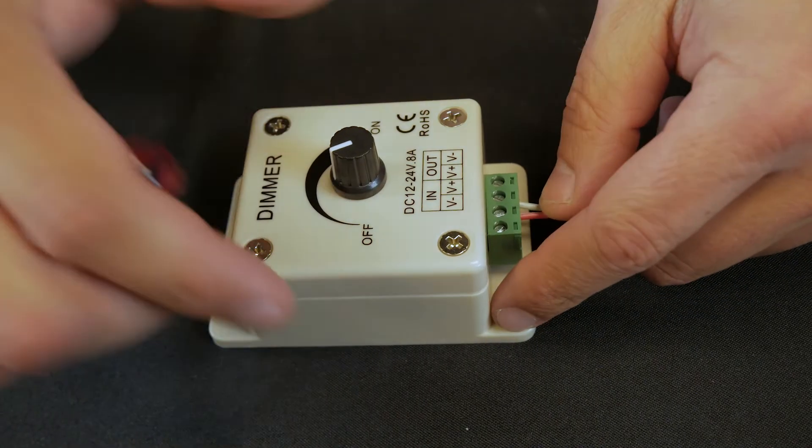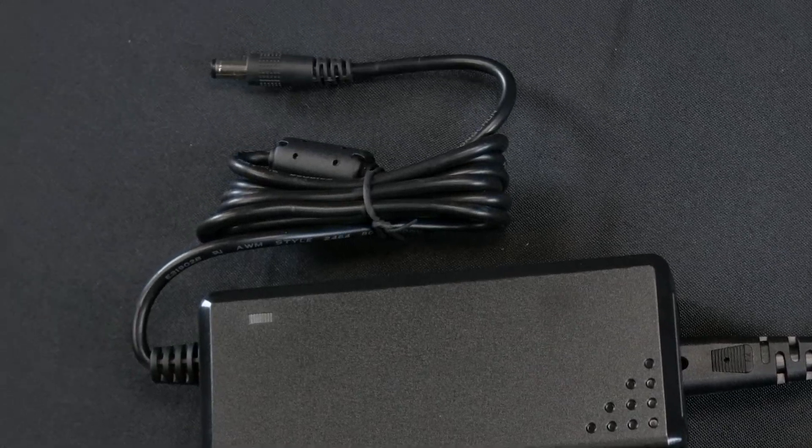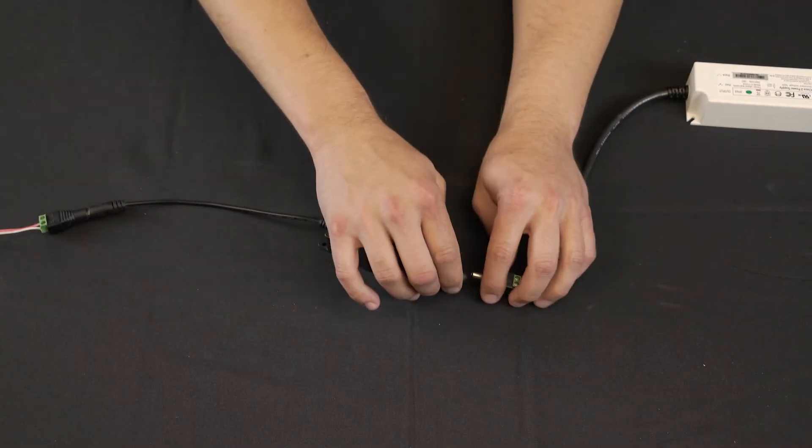We also have direct connect options, as well as power supplies with plug and play barrel connectors integrated. With the barrel connectors wired, simply plug in your strip to your switch, and your switch to your power supply.